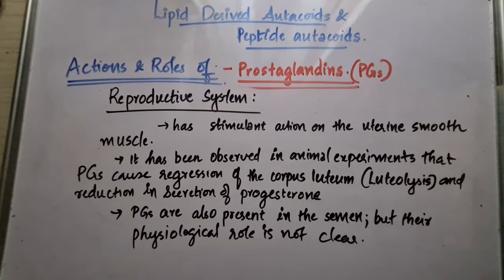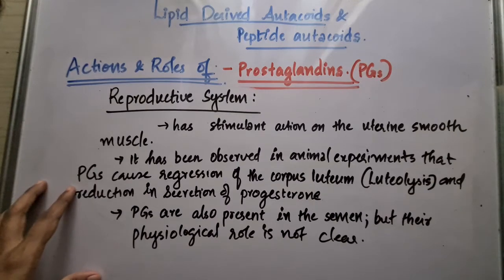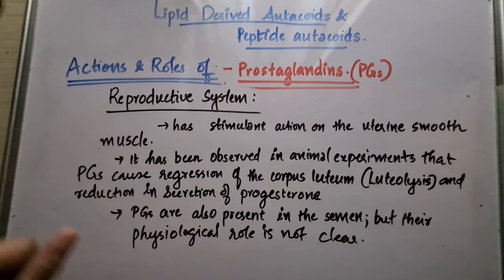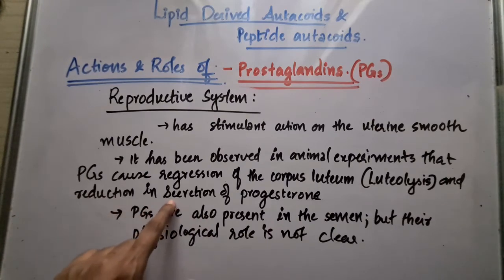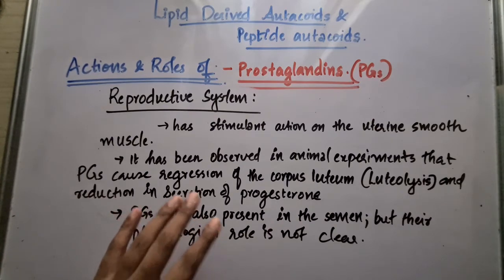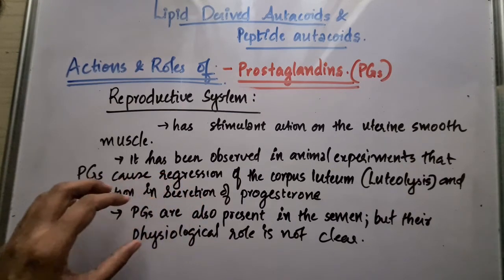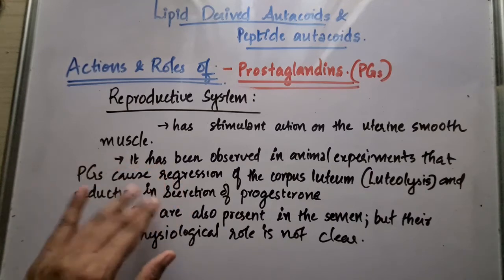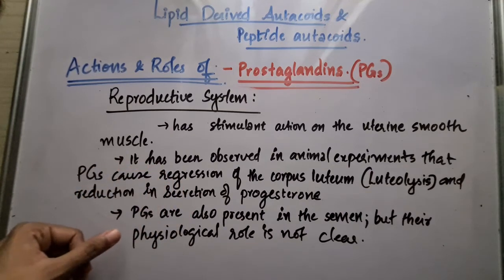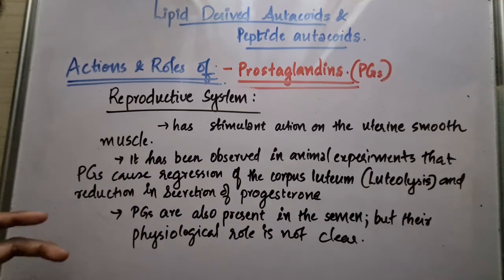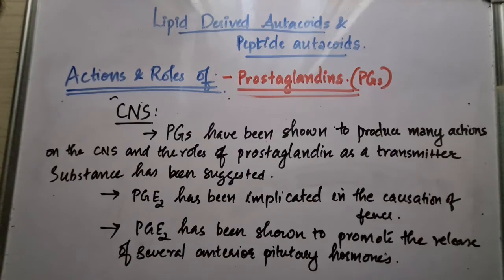Action of prostaglandins on the reproductive system: they have a stimulant action on uterine smooth muscles. In animal experiments, prostaglandins were observed to cause regression of the corpus luteum — that is, luteolysis — and reduction in secretion of progesterone, which can prevent the implantation of a fertilized ovum. Prostaglandins are also present in semen, but their physiological role is not entirely clear.